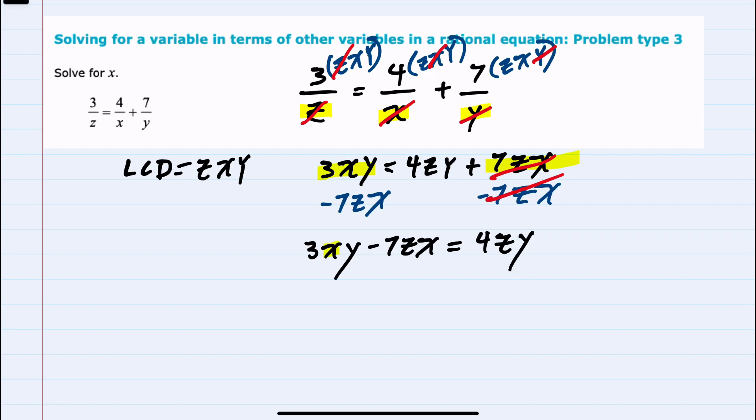And from here, to solve for x, I can factor out an x from the left-hand side, and I would be left with 3y in the first term and minus 7z in the second term.